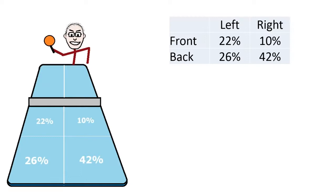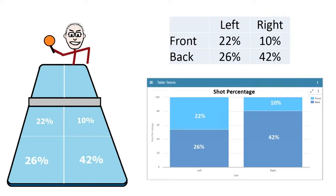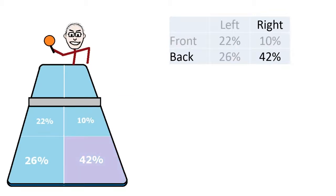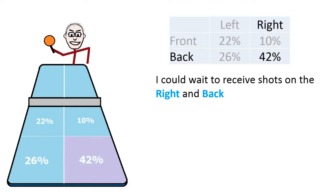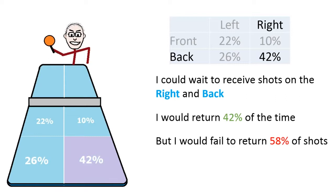This allows me to build a very simple data set and would allow me to build a dashboard over this data. So what does this dashboard tell me? This dashboard tells me that 42% of the time, Mike's going to hit the shot to the right and the back of the court. Using that data, I could decide to sit and wait and receive shots at the right and the back of the court. I would now return 42% of the shots.